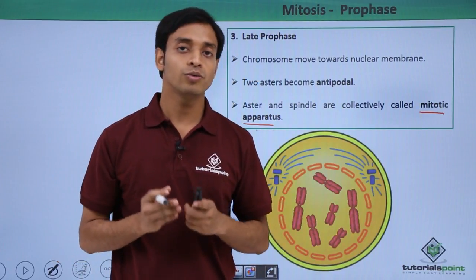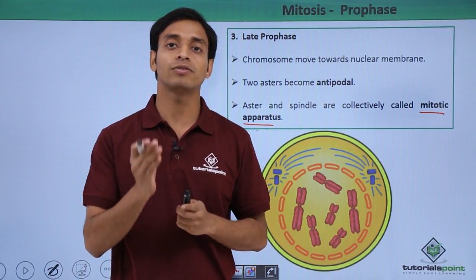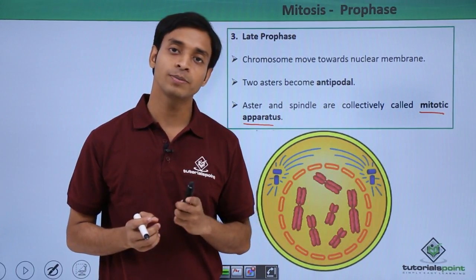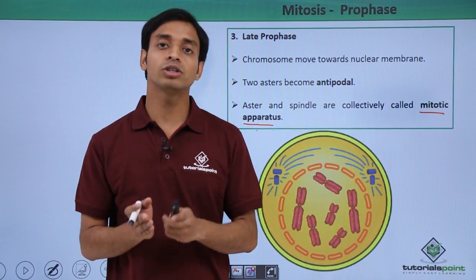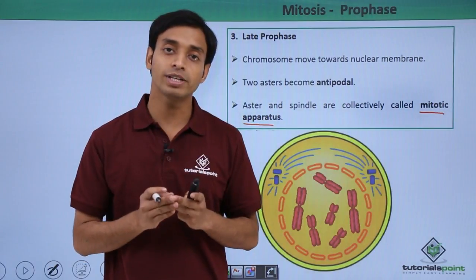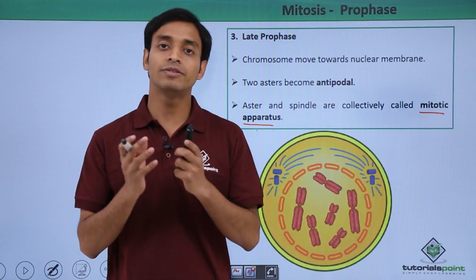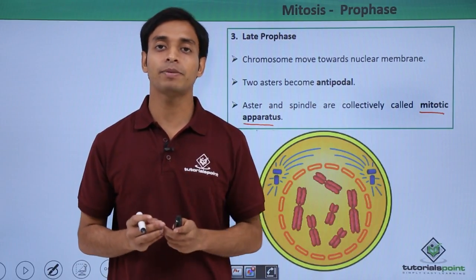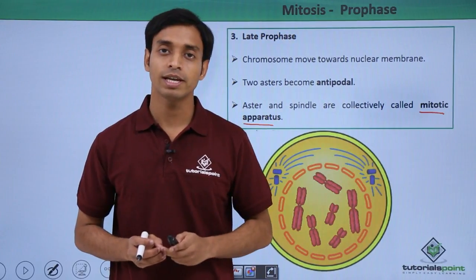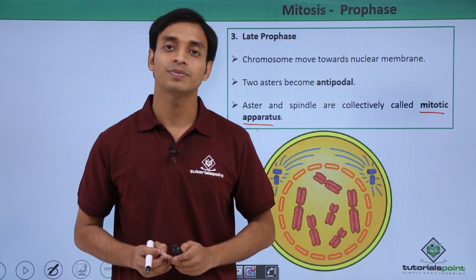In this video we have talked about prophase, the first phase of karyokinesis. We have discussed the three subdivisions — early prophase, mid prophase, and late prophase — and the different types of changes happening during each of these three phases. I hope you have understood and liked this video. Thank you.